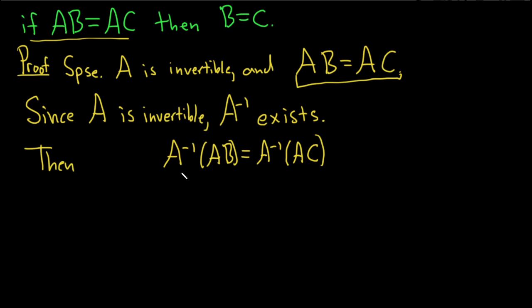And now we're going to use associativity. So we can write this as A inverse A times B, and that's equal to A inverse A times C. And this is by associativity of matrix multiplication.